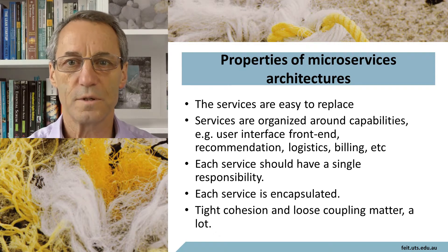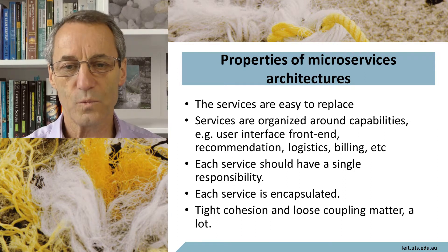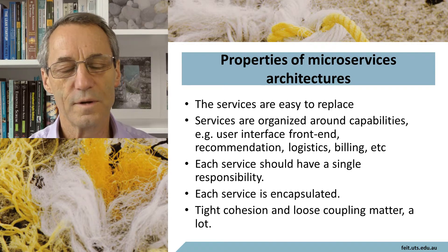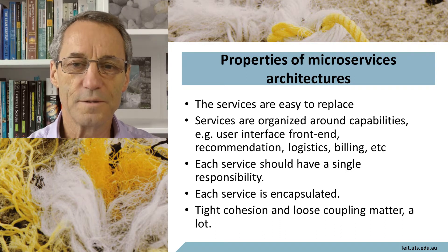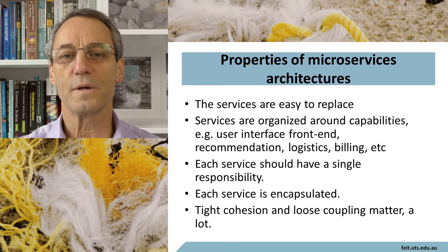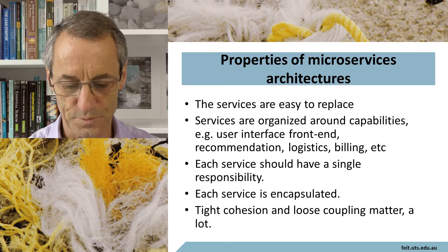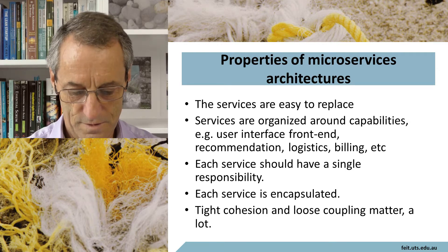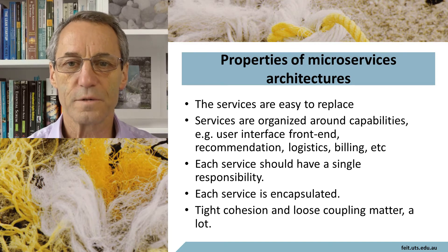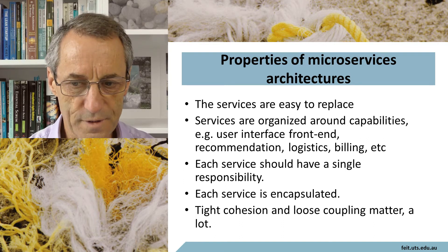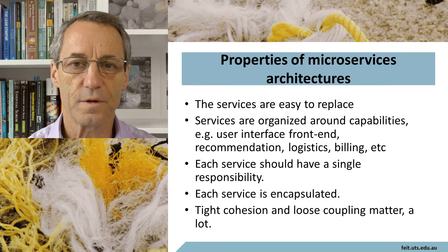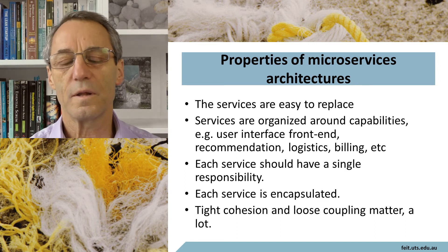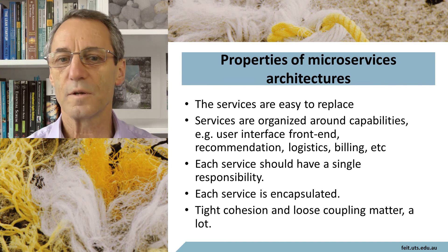Some people talk about microservices being 10 lines of code, which is possibly taking things a little too far, but they are definitely small — we're not talking about hundreds of thousands of lines of code. Each service should have a single responsibility. Each service is encapsulated with tight cohesion and loose coupling. Each service has to be tightly cohesive and highly encapsulated so that other parts of the system communicate through an API, allowing the actual implementation of that microservice to be fairly independent of everything else.